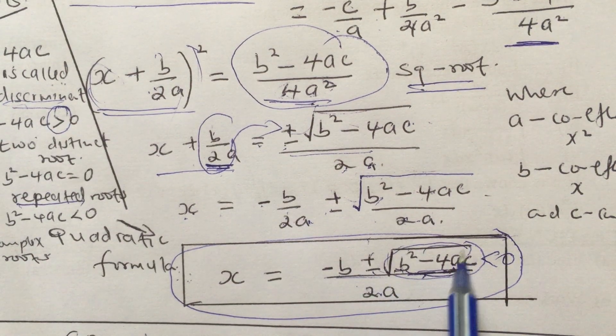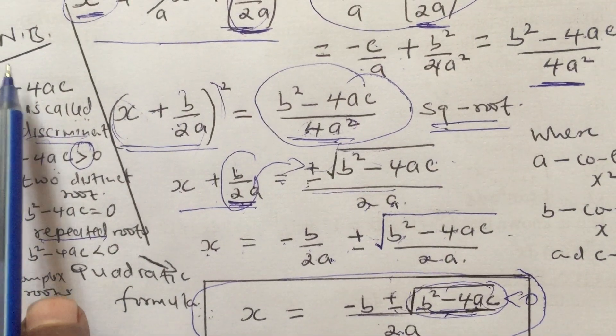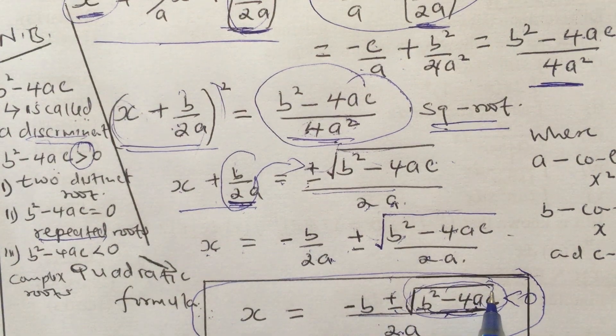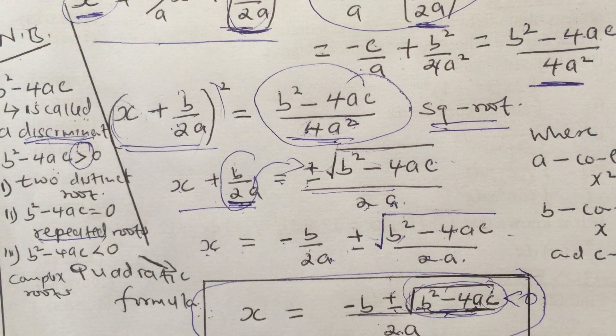And c is the remaining constant on the left-hand side. I've given an NB that whatever is under the square root is called the discriminant. The discriminant tells us or gives us more information on the type of roots that we expect.